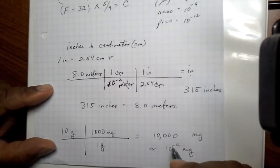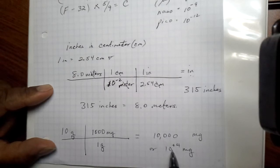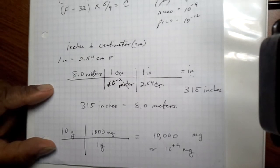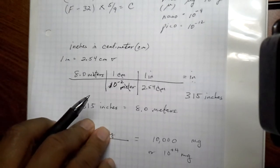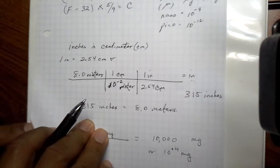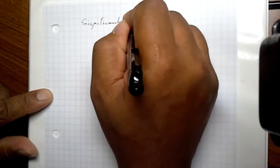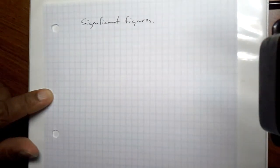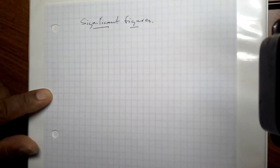Or 10 to the 4th milligrams as the exponential form of 10,000. 10 to the positive 4 milligrams. All right. There are some rules involving values, numbers, that we should be familiar with. These rules involve what I call significant figures. Stay tuned for the second part of this lecture, where we will talk about significant figures.